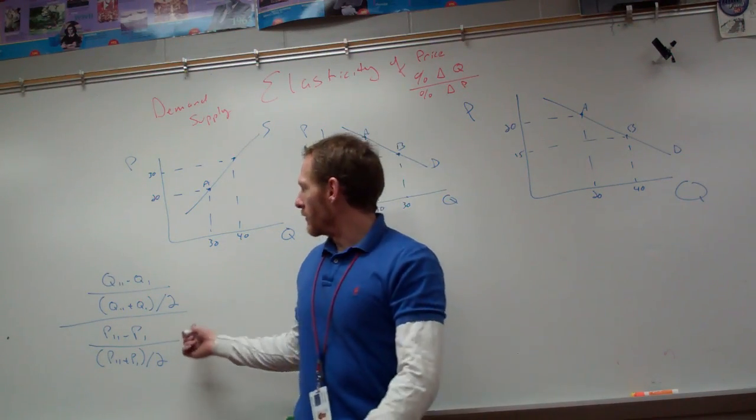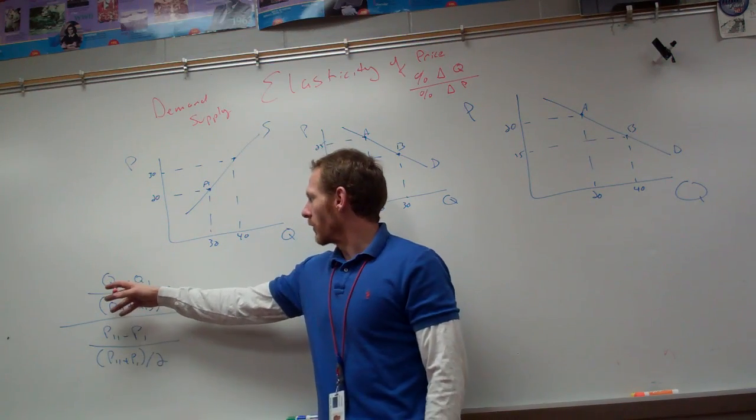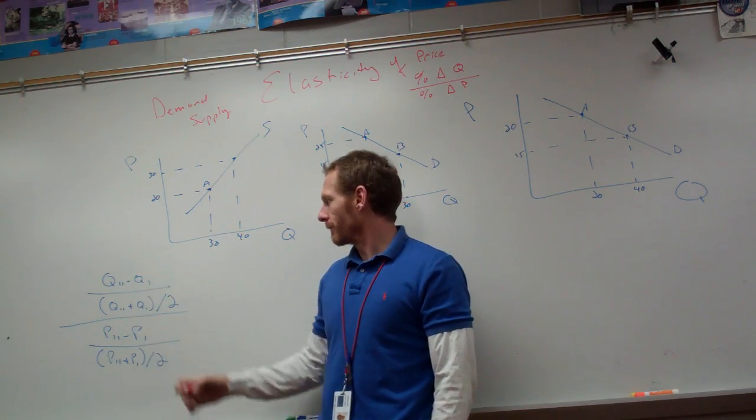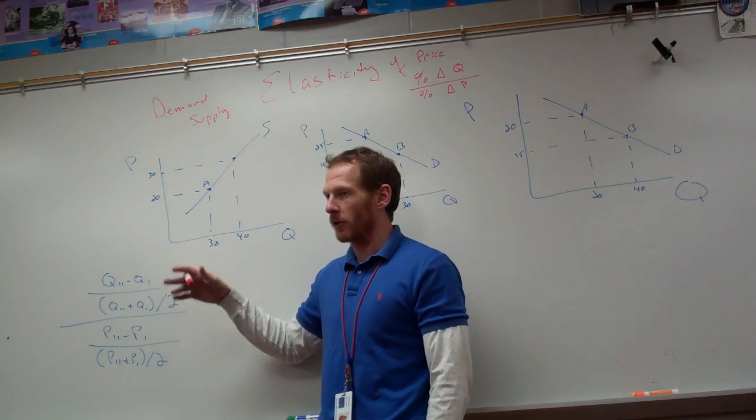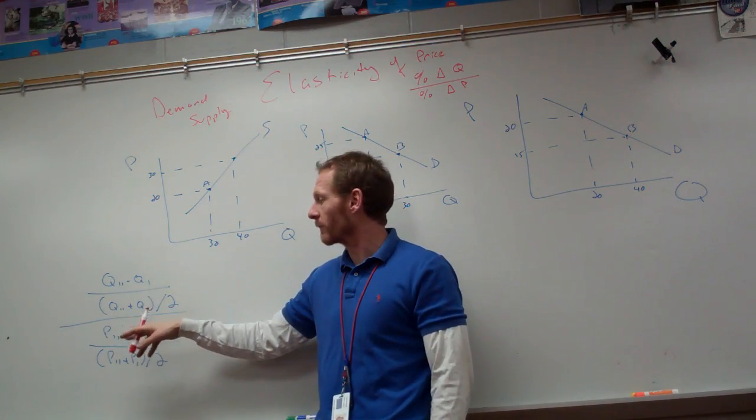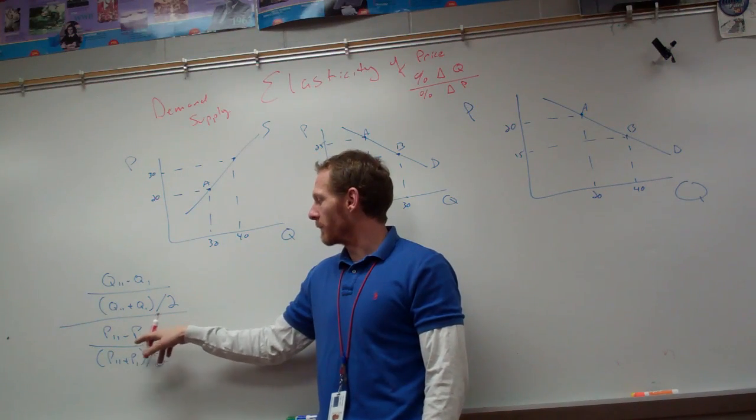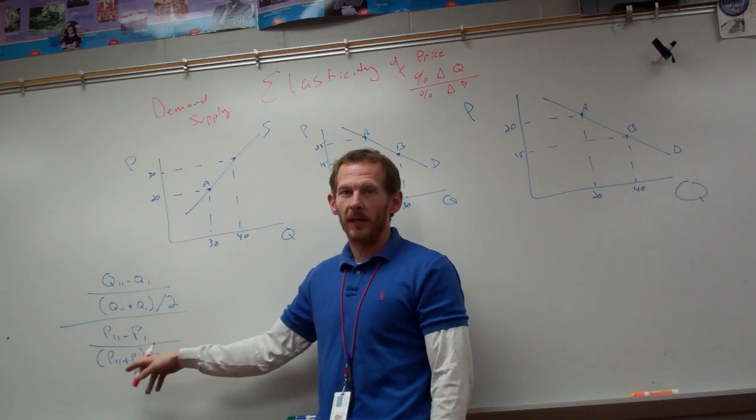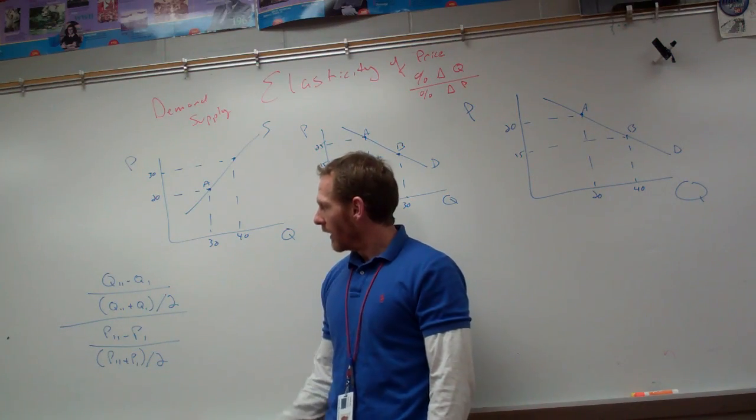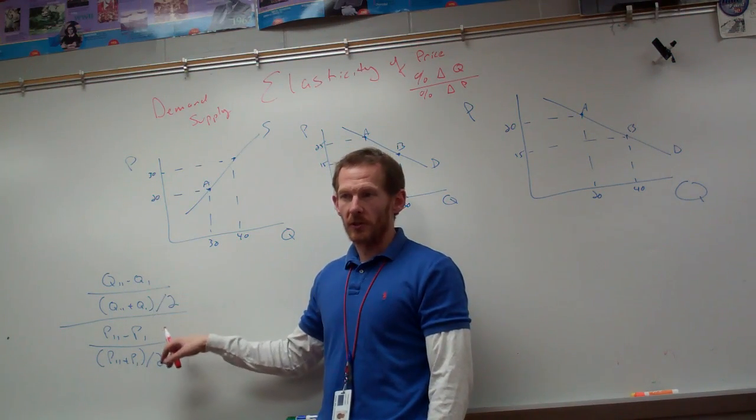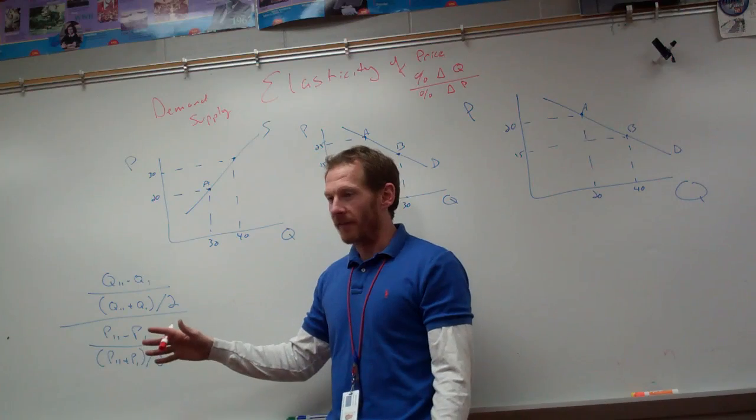And how you figure that, as you can see here, Q sub 2 minus Q sub 1, all over Q sub 2 plus Q sub 1 divided by 2. Remember to do your order of operations, do them inside the parentheses first. All over P sub 2 minus P sub 1 over P sub 1 plus P sub 2 divided by 2. So this is giving you the percent change in Q, this is giving you the percent change in P, and you divide the two.